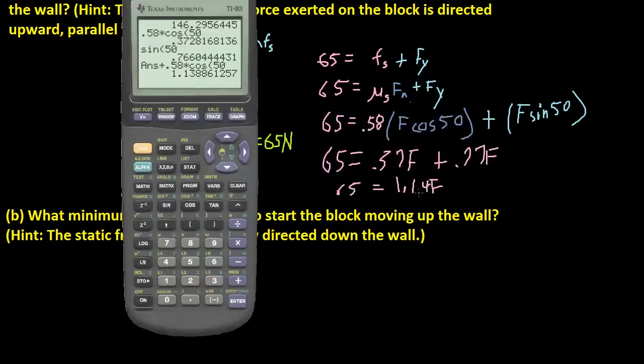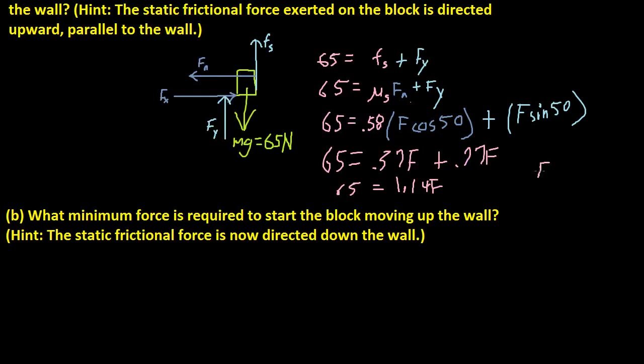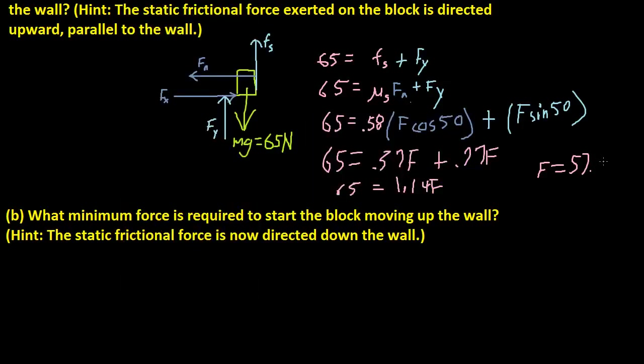Combined result gives us 65 is equal to 1.14f. So let's solve for F. We just divide each side by 1.14. So let's divide 65 divided by 1.14. So we get 57.04. So our force is 57.07 newtons. There's our force. And that's basically how you do it.